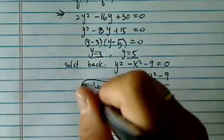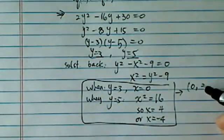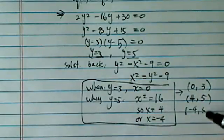So basically, we have 3 intersections. The 3 intersection points are 0, 3, 4, 5, and minus 4, and 5.